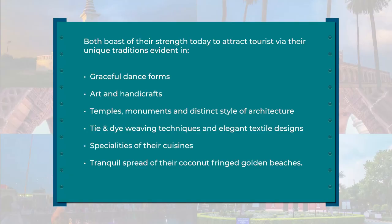Kalinga and Bali had intimate trade links, including Gauda, which is Bengal, and other coastal states of India. A voyage from the Kalinga coast to Java or Bali Island in those days used to take about 40 days. With the decline of the Brahminical and Buddhist dynasties in Indonesia and Malaysia, this maritime link with India gradually diminished. Today, both countries — Indonesia and India, especially the region of Orissa — boast of strength in commonly influenced traditions. These are evident in the graceful dance forms which can be seen in both Orissa and Indonesia, and in the arts and handicrafts which were impacted by each other.